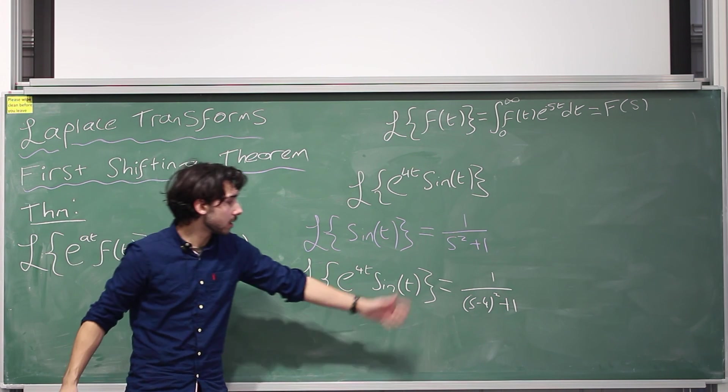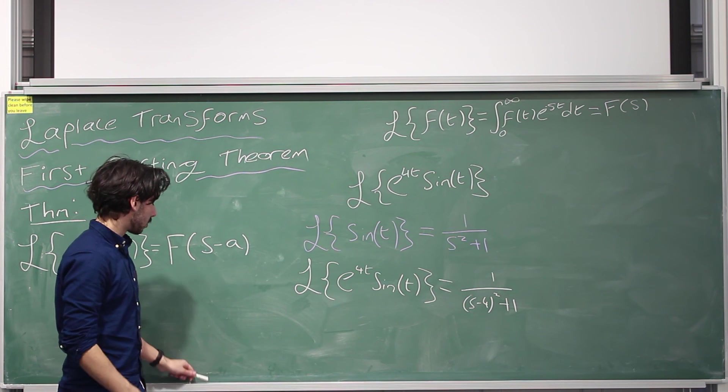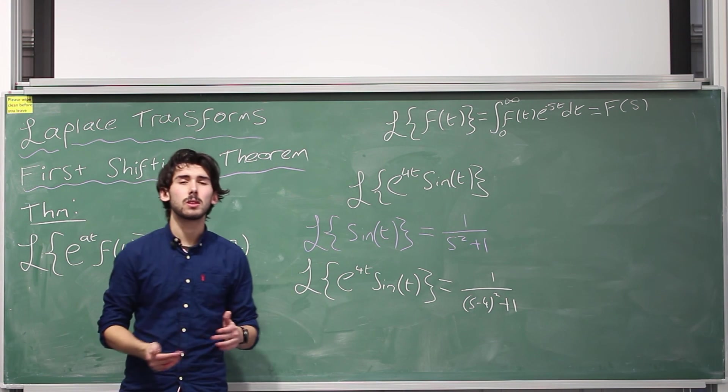So the Laplace transform of e to the 4t sine t is 1 over s minus 4 squared plus 1. You could obviously expand that out if you want, but there's no point in us doing that, it's too easy for us guys, it's too easy for us.